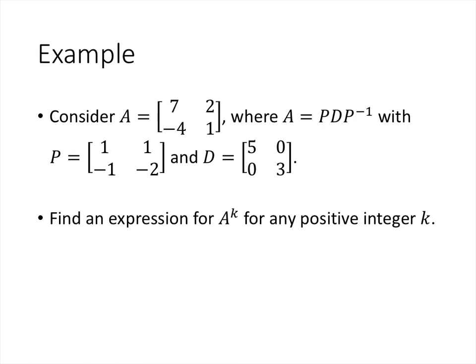Let's look at an example. Here's a matrix A, and I'm telling you it can be written as PDP⁻¹, where P is the matrix [1, 1; -1, -2] and D is the diagonal matrix [5, 0; 0, 3]. We'll get into how we know that, but for now just accept it. We want to find an expression for A^k for any positive integer k. Since A^k equals PD^kP⁻¹, we use those matrices directly.